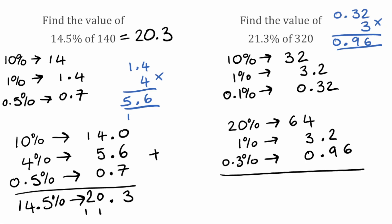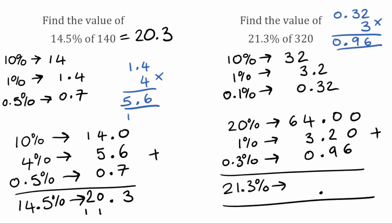So as before, all we're going to do now is add our columns together. I'm going to put these all to two decimal places to line them up and then add through. We've got 0 add 0 add 6 is 6; 0 add 2 add 9 is 11, so 1 carry 1; 4 add 3 is 7, add 1 is 8; then 6 on its own. So 21.3% of 320 is equal to 68.16.